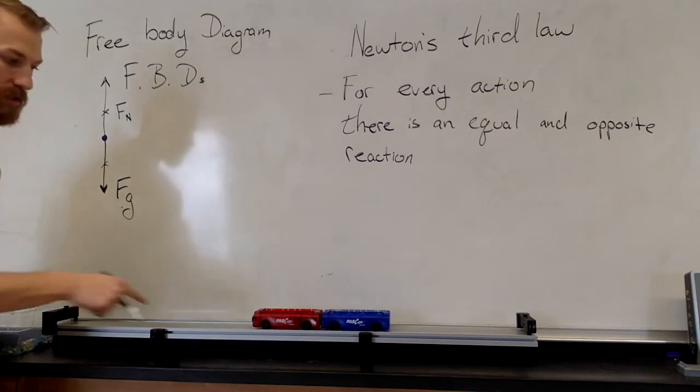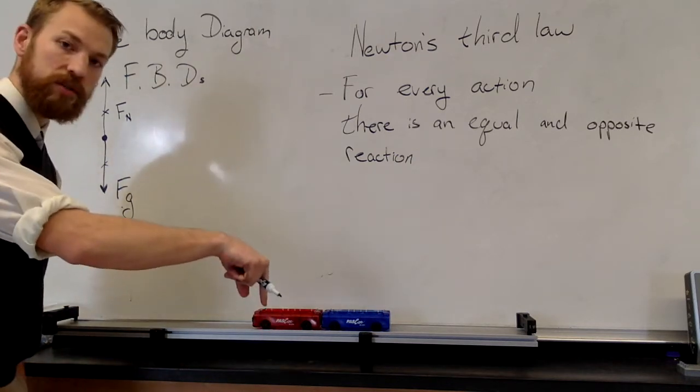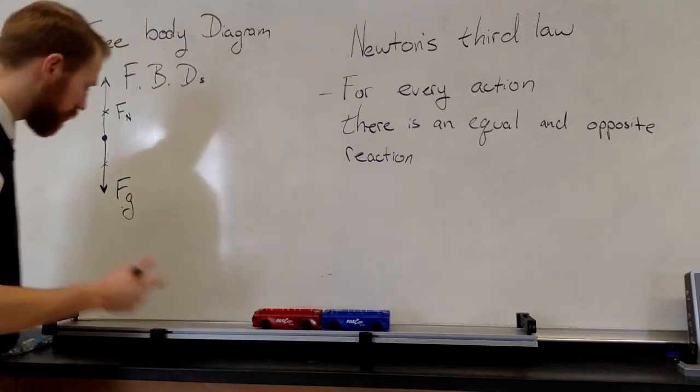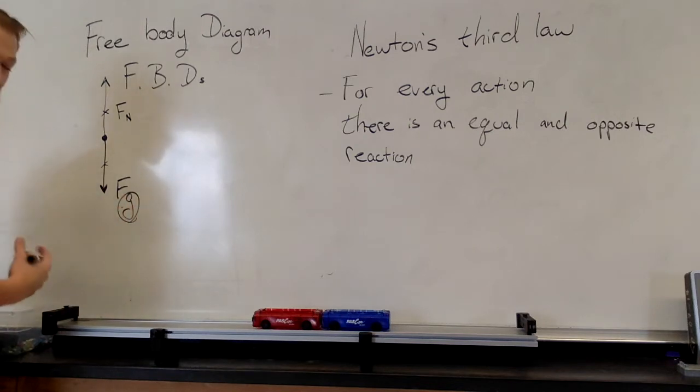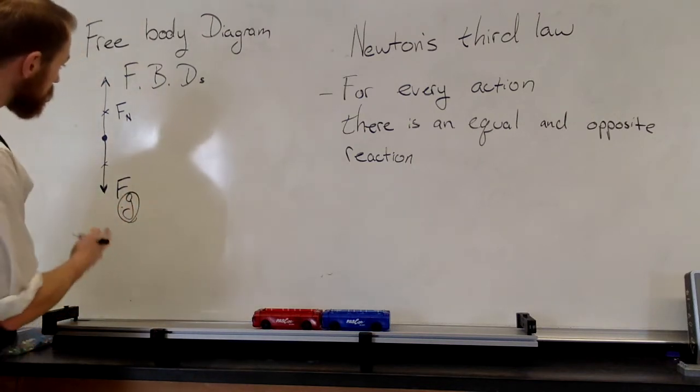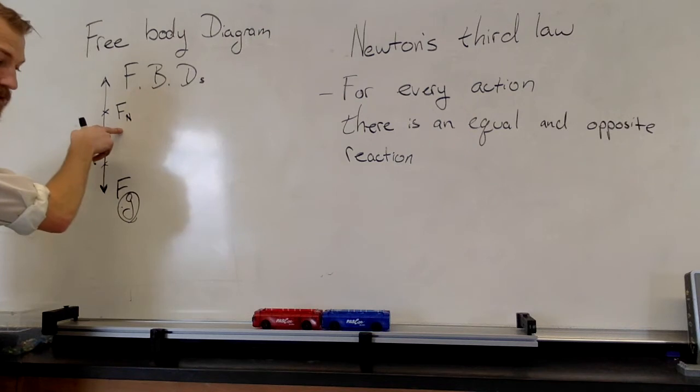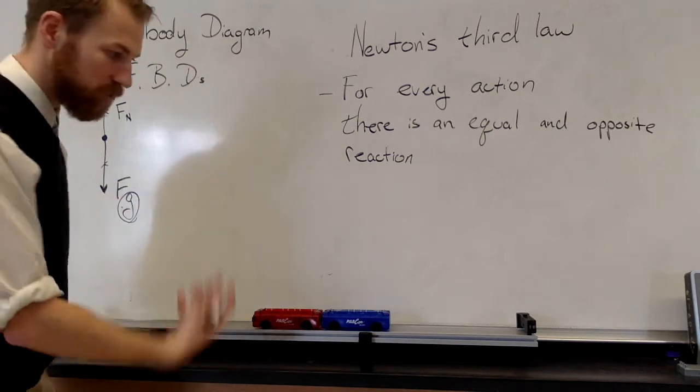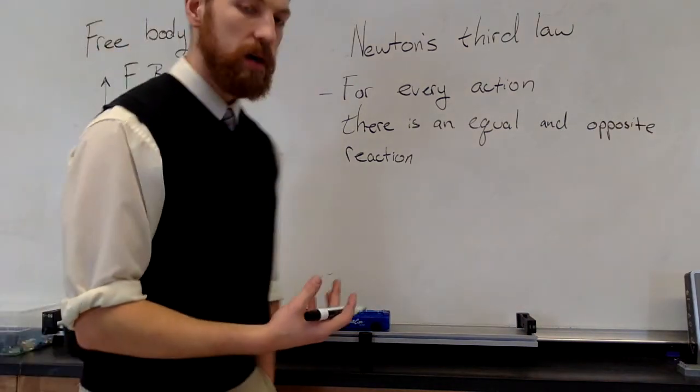The same forces. This object is putting a force downward, equal to gravity, equal really to its weight. And then the surface has to push back upwards with an equal and opposite force. If not, the object would drop straight down through that table.